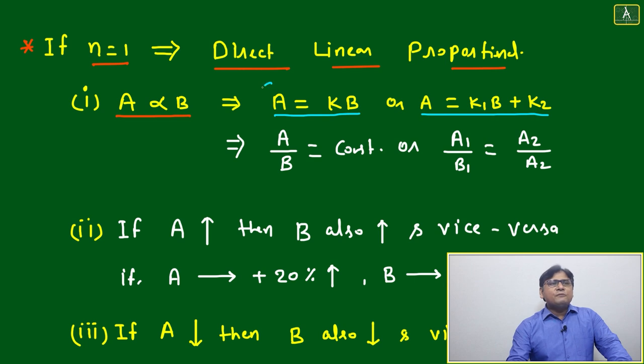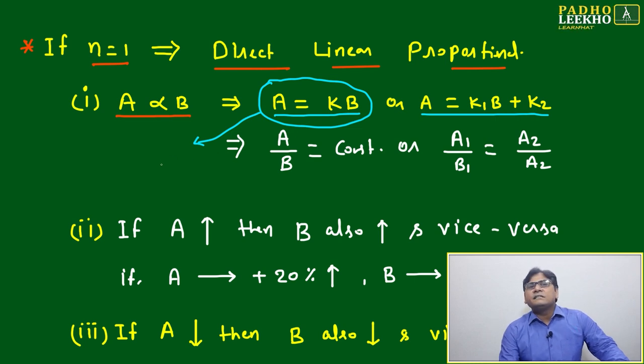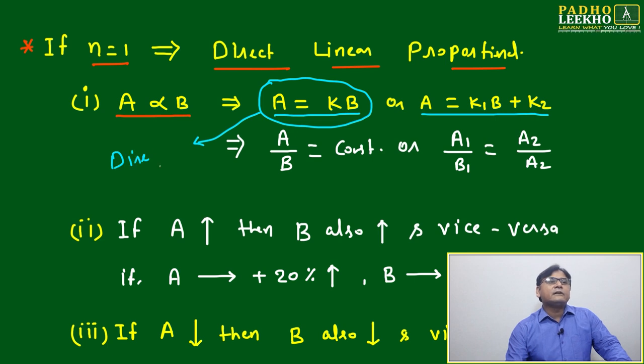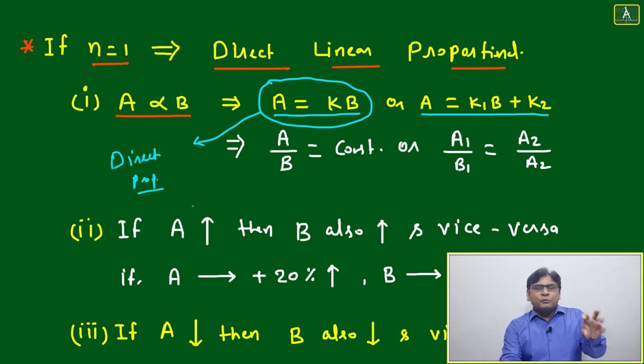Especially if constant term is not there, means A is equal to k into B. If this graph is crossing through origin, then this exact relation is called direct proportional, means direct proportionality. It is just part of direct relationship.